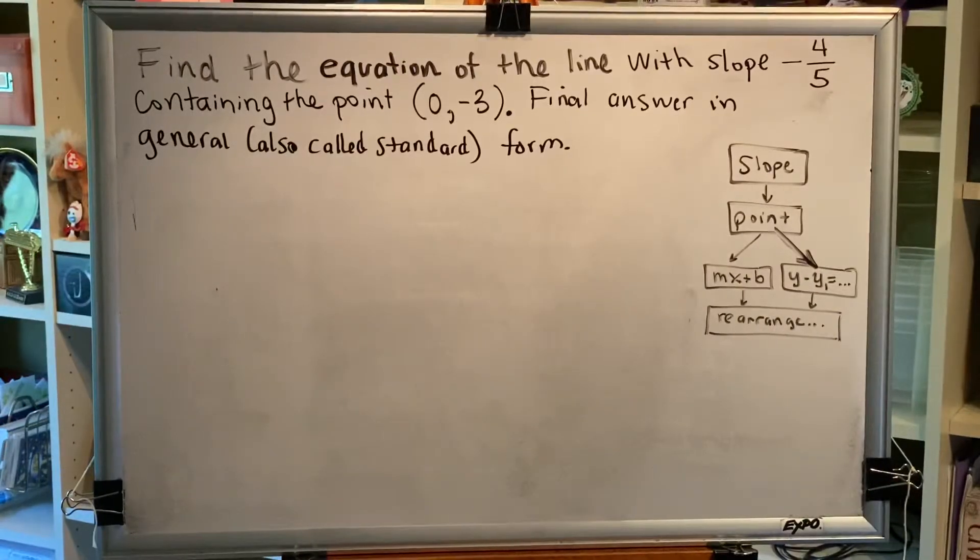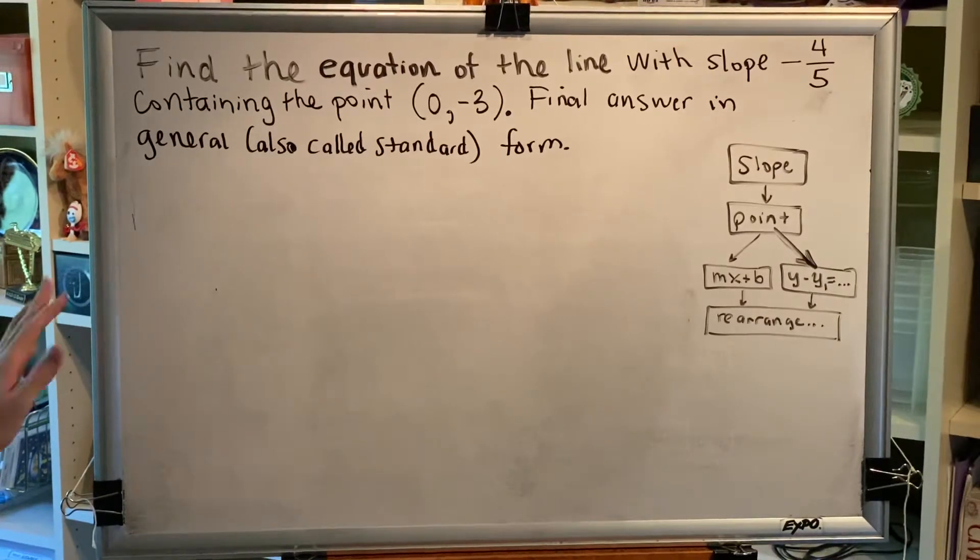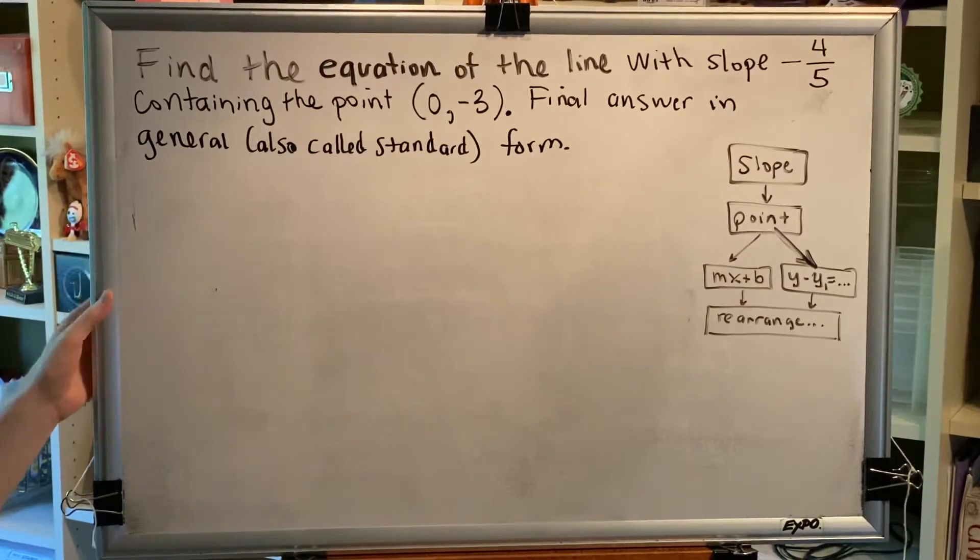The topic of this video is properties of tilted or slanted lines. Let's look at a problem. Find the equation of the line with slope negative four-fifths containing the point zero comma negative three. Express your final answer in general, also called standard form.